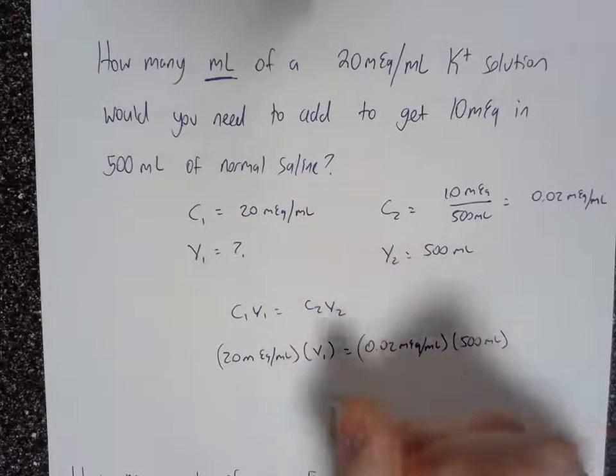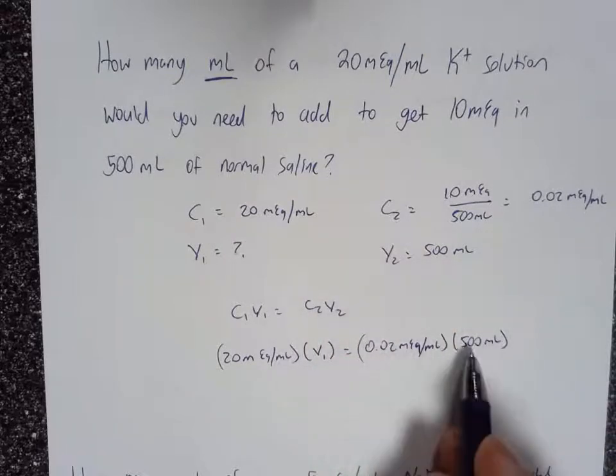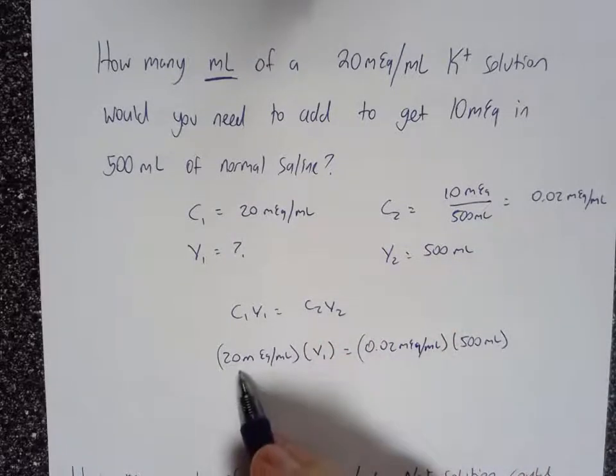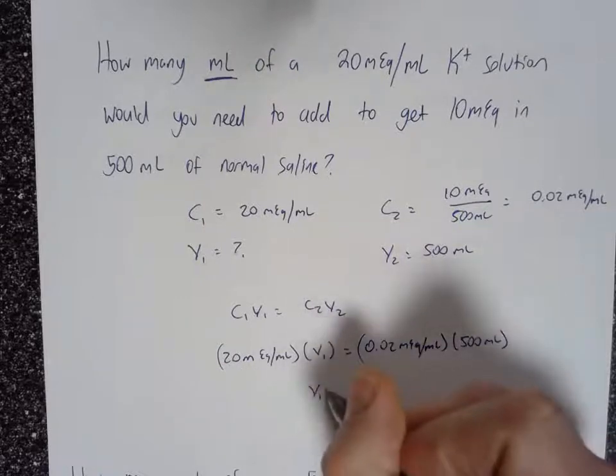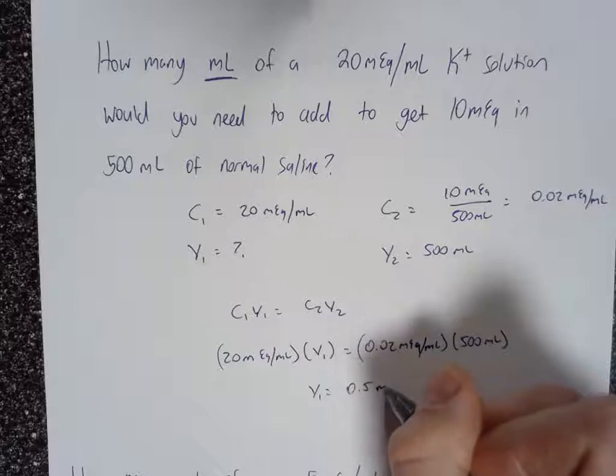And then when we solve for V1, we're going to multiply these two numbers together and then divide by this number. And when we do that, V1 equals 0.5 milliliters.